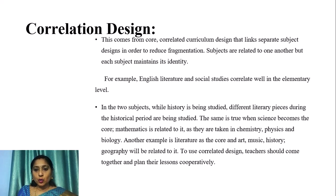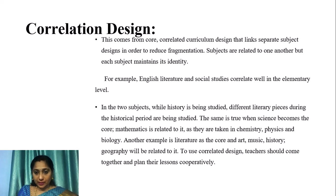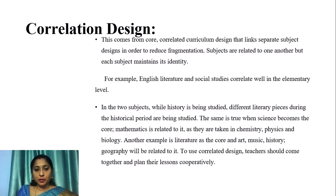The same is true when science becomes the core — mathematics is related to it as they are taken in chemistry, physics and biology. Another example is literature as the core, with art, music, history and geography related to it. To use correlated design, teachers should come together and plan their lessons cooperatively.